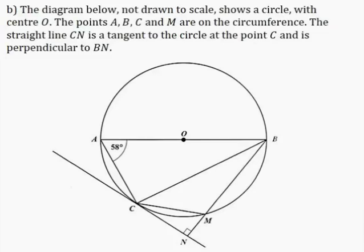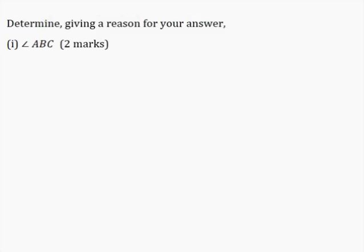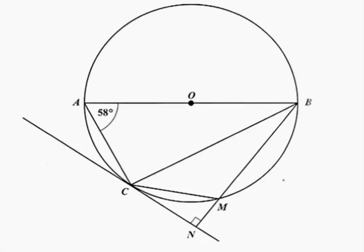Part B: The diagram below, not drawn to scale, shows a circle with center O. The points A, B, C and M are on the circumference. The straight line CN is a tangent to the circle at point C and is perpendicular to BN. Determine, giving a reason for your answer. Part 1: angle ABC for two marks. From our diagram, angle ABC is this angle here. The angle in a semicircle is a right angle, so angle ACB is 90 degrees. I can find angle ABC by adding up these two angles and subtracting from 180 degrees.